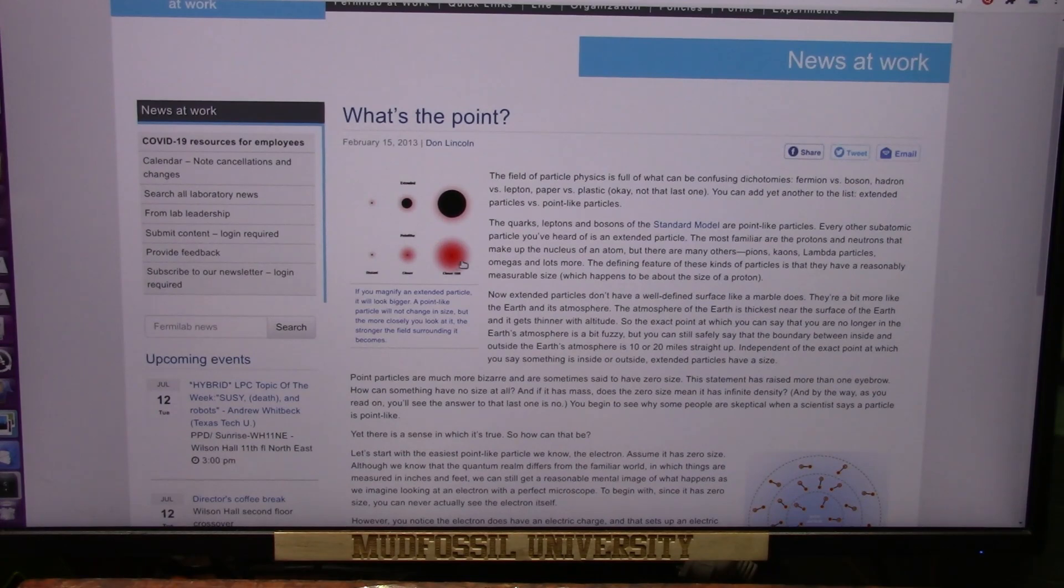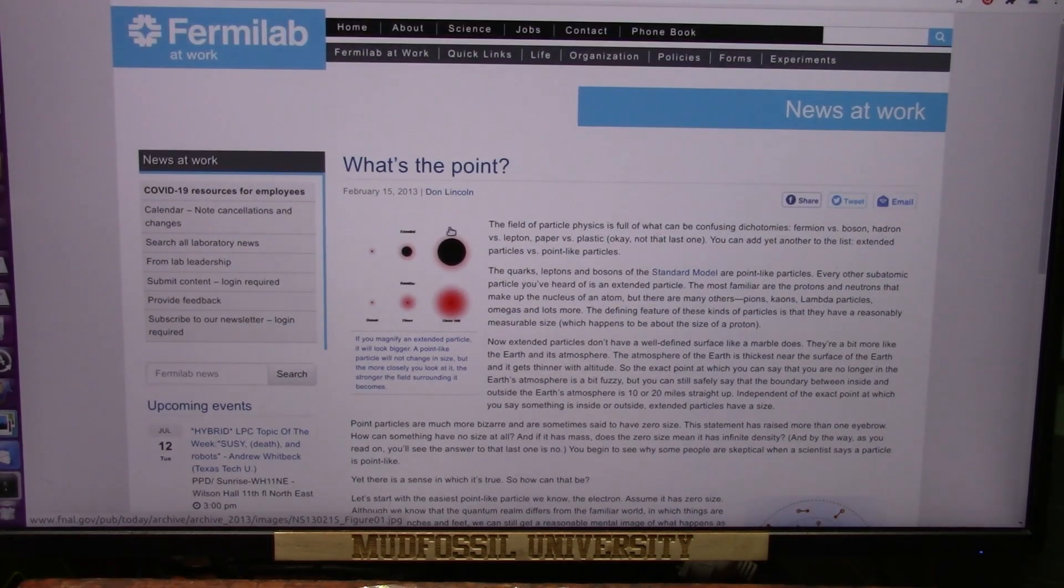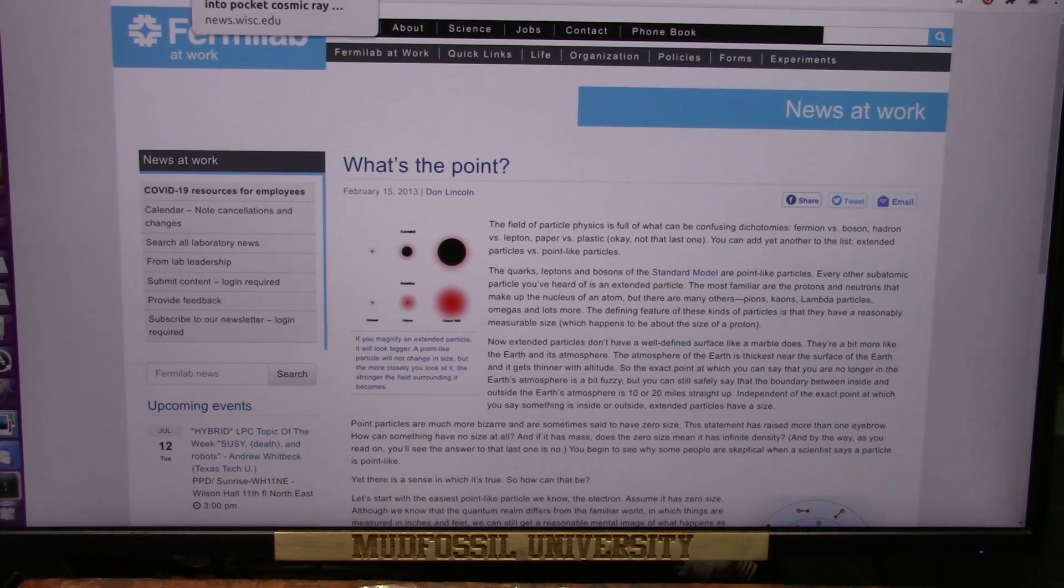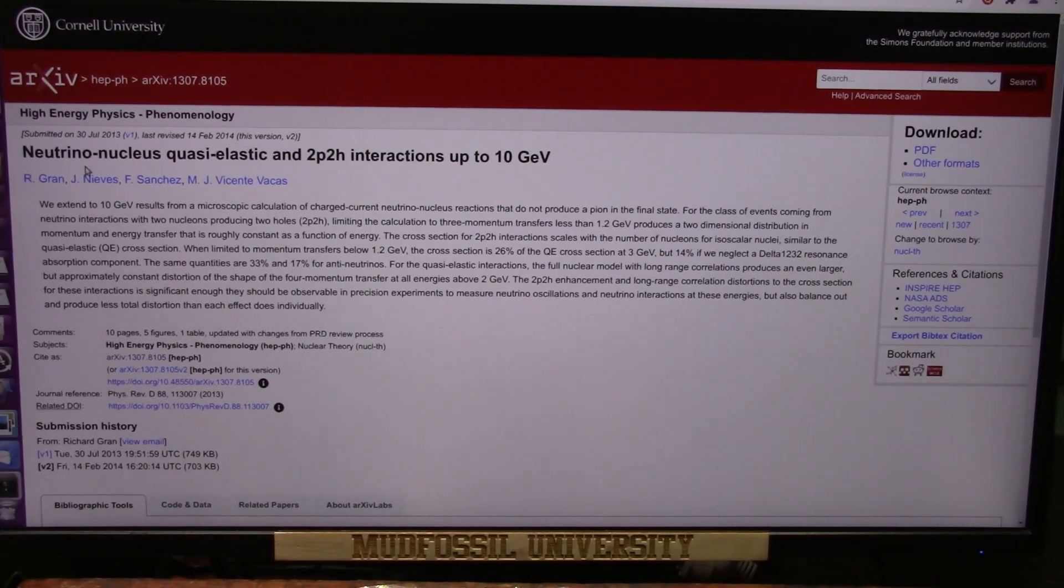Even zero-size particles have an extended effect due to the effect of the field surrounding them. And that's what happened. We crushed that field, and we forced this one to separate from this one. Cornell also found this neutrino nucleus, the neutrinos, quasi-elastic.